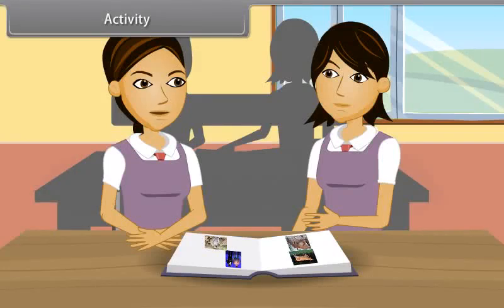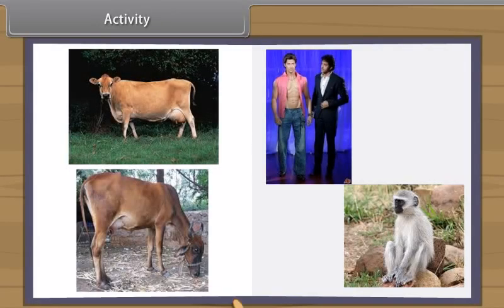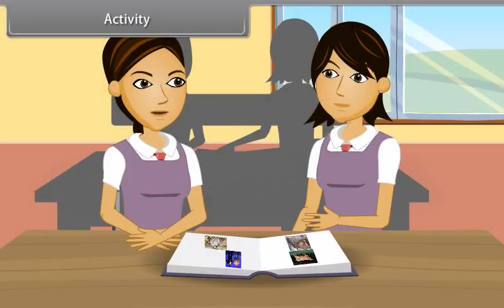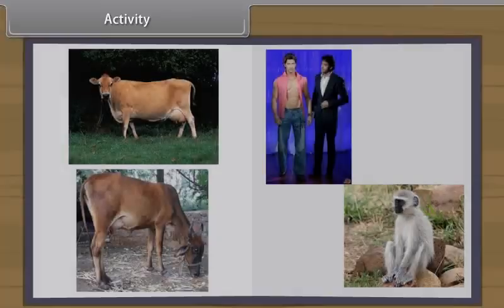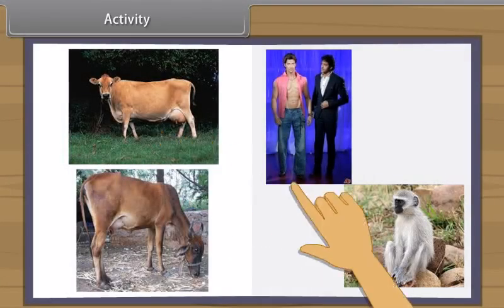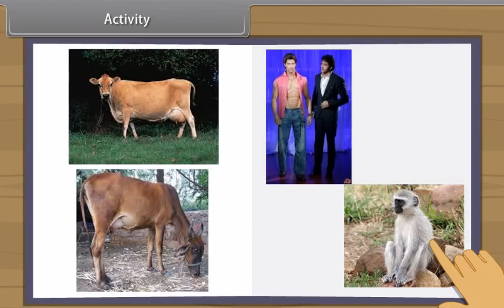Let us do an activity to find out the similarities within a genus and differences among various genera. When we study physical characters of desi cow and jersey cow, we find very few differences. But jersey cow can be distinguished from a distance due to its height and stature. But when we look at cow and monkey, we find that man resembles more to a monkey than a cow, although all are mammals.